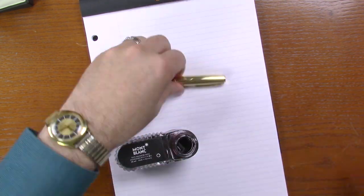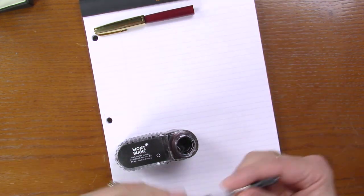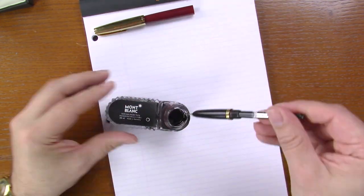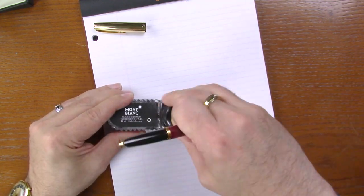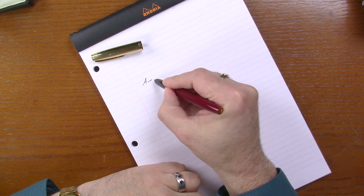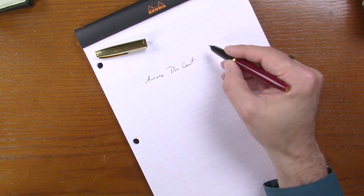Got my standard Rhodia pad. Got a bottle of Montblanc black here. And again, this is cartridge or converter. The Duo Cart only comes in one nib size. It's kind of a fine medium nib.